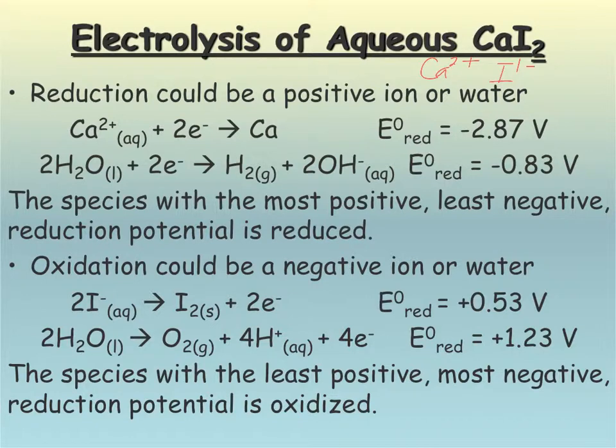Okay, so I know for my reduction, my calcium could be reduced and my water could also be reduced and to form hydrogen gas and hydroxide. So I want to pick the least negative or the most positive of the two of these. So that's definitely going to be water in this case. So this is what's occurring at my cathode.